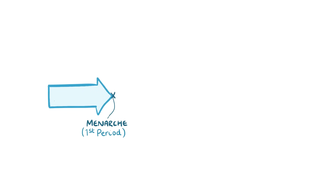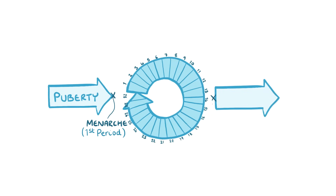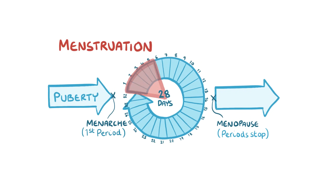Menarche, which refers to the onset of the first menstrual period, usually occurs during early adolescence as part of puberty. Following menarche, the menstrual cycle recurs on a monthly basis, pausing only during pregnancy until a person reaches menopause, when her ovarian function declines and she stops having menstrual periods. The monthly menstrual cycle can vary in duration from 20 to 35 days, with an average of 28 days. Each menstrual cycle begins on the first day of menstruation, usually referred to as day one of the cycle.